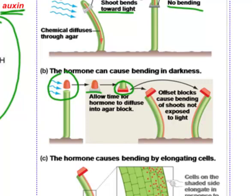He discovered you can have a lot of fun with this: if you take that hormone-filled block of agar and put it on the right-hand side of the tip, this side grows faster, the cells get longer, and it bends towards the left. Whereas if you do the opposite and put the hormone-filled gelatin on the left-hand side, the left side of the plant grows faster and it bends towards the right.